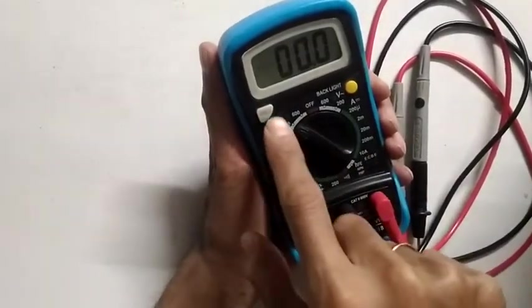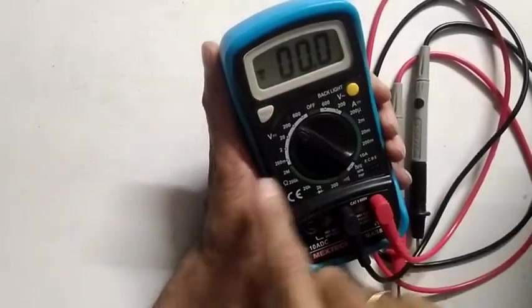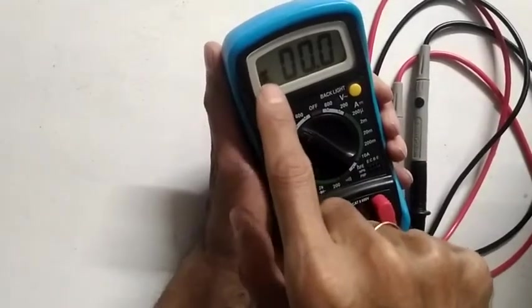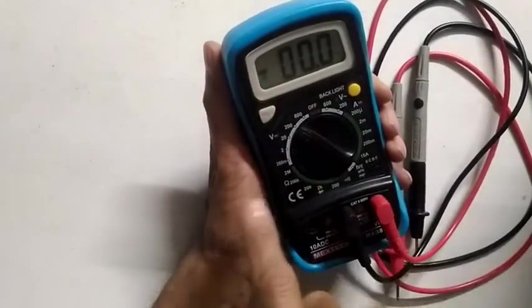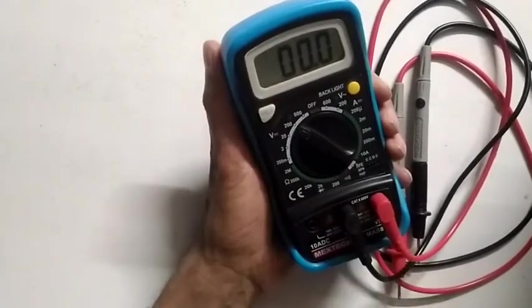Another feature is a hold facility. You may want to take a reading and note it down. Whatever reading comes up, if you press the hold, it has gone into hold. You can see that H coming over here. The minus was blinking, so now it is on hold. You have to press it once again to get it out of hold.